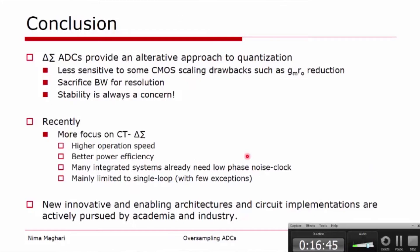So in conclusion, Delta Sigma modulators provide an alternative approach to quantization, and that is to oversample and noise shape at the same time. They are less sensitive to many of the CMOS scaling drawbacks in context of analog, especially the gmro reduction, because you can get away with a very low gain op-amp and still have a significant signal-to-noise ratio at the cost of sacrificing the bandwidth for the resolution. Stability is always a concern if you're designing anything above third order or if you're using very low number of quantization bits, such as one bit or one-and-a-half bit.